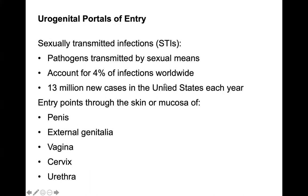The urogenital tract involves sexually transmitted infections. Pathogens transmitted by sexual means account for about 4% of infections worldwide, with 13 million new cases in the U.S. each year. Entry points include the skin or mucosa of the penis, external genitalia, vaginal tract, cervix, and urethra.